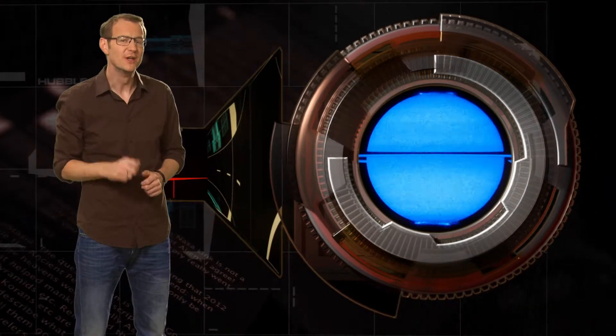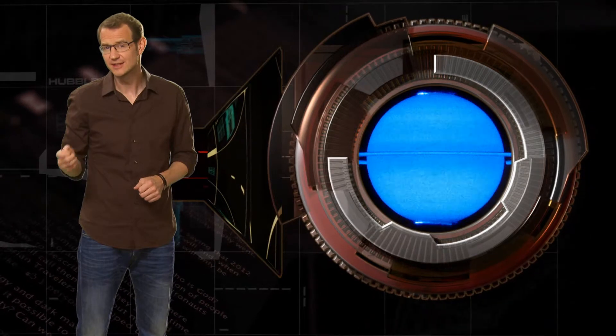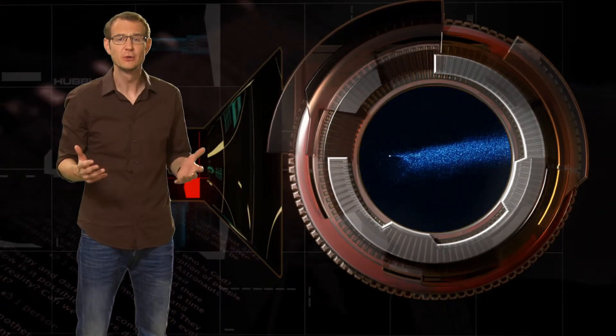Now, Hubble is really good at this type of observation, because A, its images are very detailed, so that it can spot even very subtle motion, and B, it's been in operation for so long, almost 22 years now.